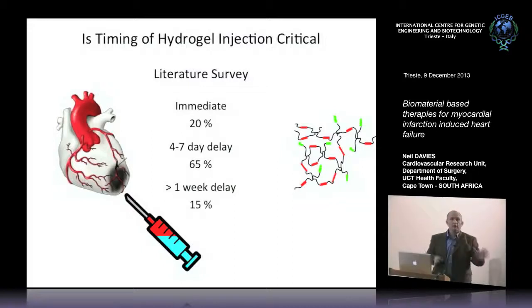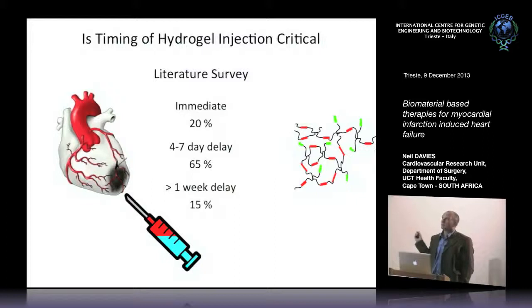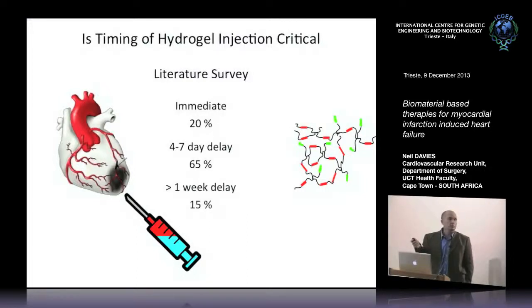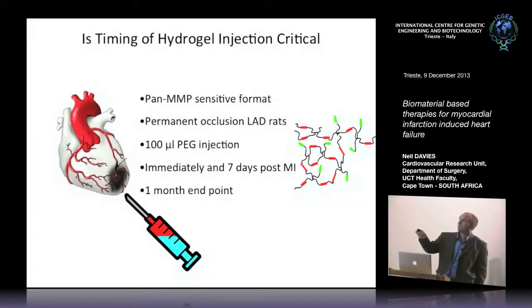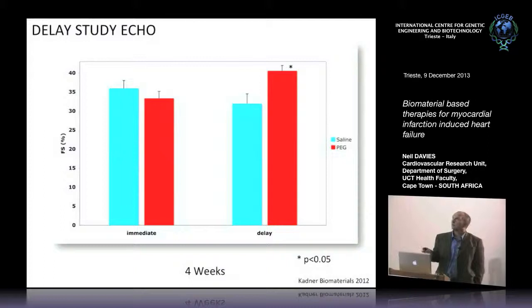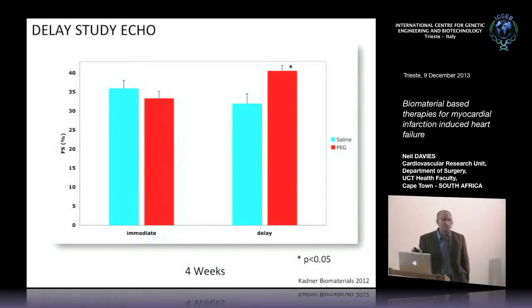We wanted to ask a fundamental question, because the literature shows a mishmash of attempts — people injecting different volumes, some immediately after infarction, some at four to seven days, some even later. We thought the more interesting time points were immediate or four to seven days, which is probably most useful in the clinic. We injected our MMP-sensitive PEG gel immediately or after one week, using the same LAD occlusion rat model.